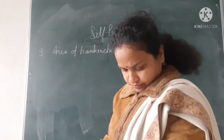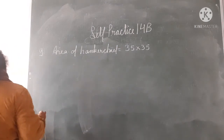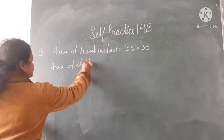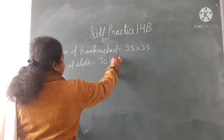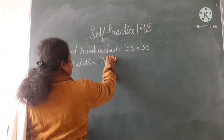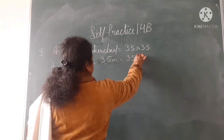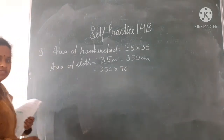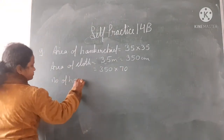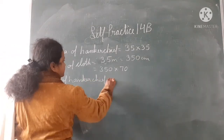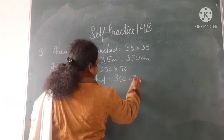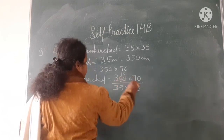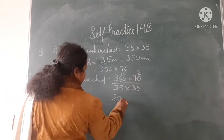Area of cloth: 3.5 metre is equal to 350 centimetre, so you will have 350 into 70. Number of handkerchiefs equals 350 into 70 upon 35 into 35. 35 tens are 350, 35 twos are 70. So you get 20 handkerchiefs.